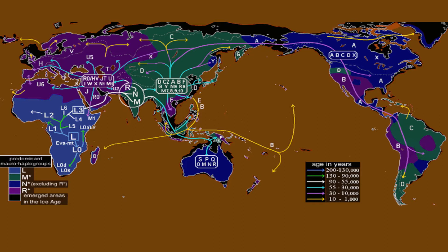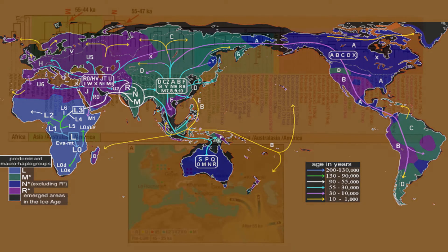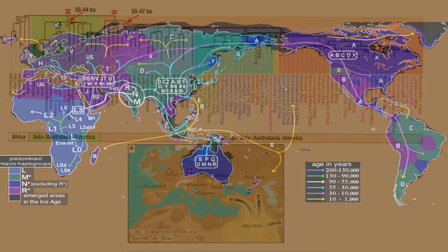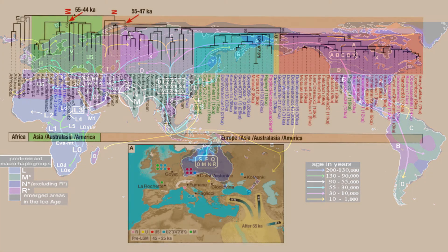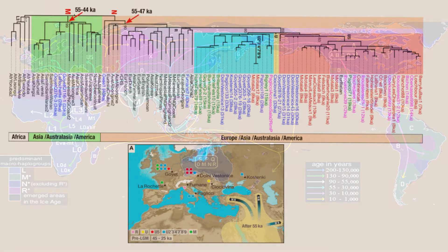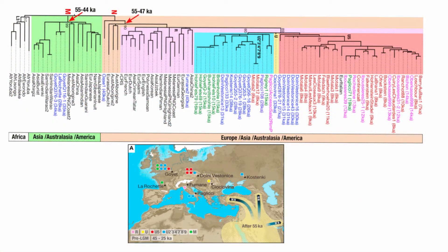There are many haplogroup migration maps linking a haplogroup to a major migration event, but one needs to dig deeper — as exemplified by the Ashkenazi Levite case. The situation is more complex with regards to the Y chromosome and in particular mitochondrial DNA. For example, mitochondrial haplogroup M is common in modern Asian populations and extremely rare in Europe, but this was not always the case — it was common in the Upper Paleolithic, the Old Stone Age, in Europe as well, as we know from ancient DNA studies.